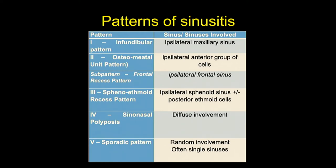Pattern 1 is the infundibular pattern. The infundibulum drains the maxillary sinus and the ethmoid sinuses, so when the infundibulum is obstructed, the sinuses involved are the ipsilateral maxillary sinus and the anterior ethmoidal group. Pattern 2 is the osteomeatal unit pattern, which will obstruct all the anterior group of sinuses, giving disease in the frontal, anterior ethmoidal, and maxillary sinuses.